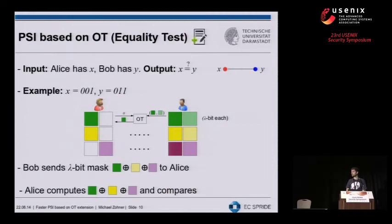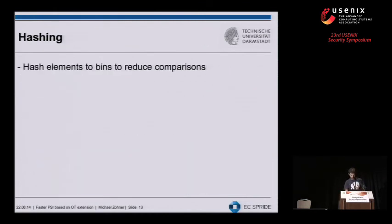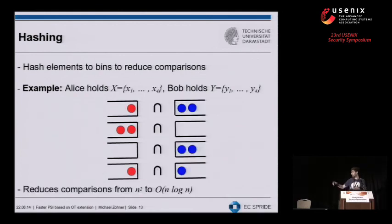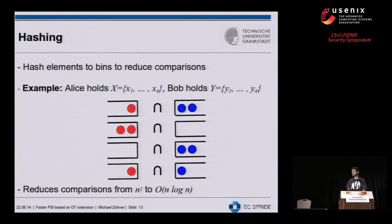Follow-up question: Can the hashing optimization be applied to the elliptic-curve-based protocol? Response: No, it wouldn't give any benefit — hashing actually adds overhead. With hashing you incur N log N overhead, whereas the elliptic curve protocol only requires N operations from the start, so applying hashing would add overhead. Another question: At NDSS 2012 the claim was that their protocol was much faster than public key crypto — why the difference in conclusion?